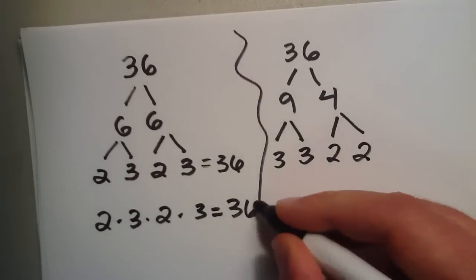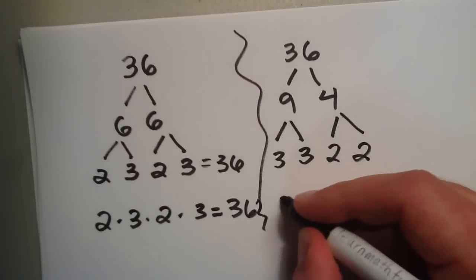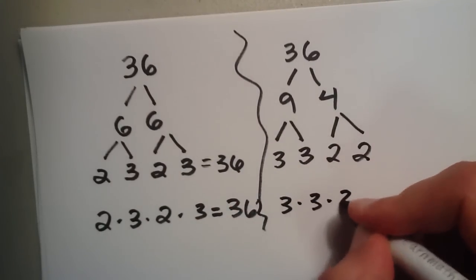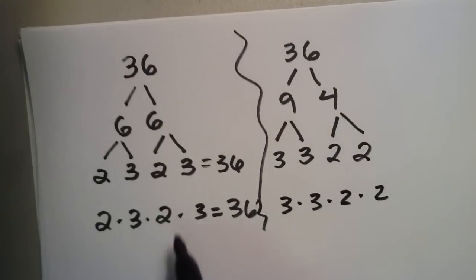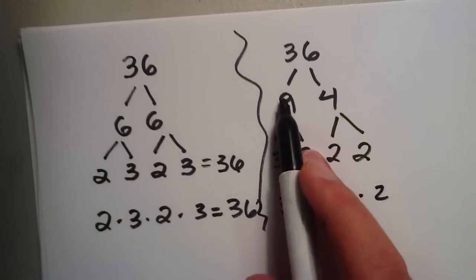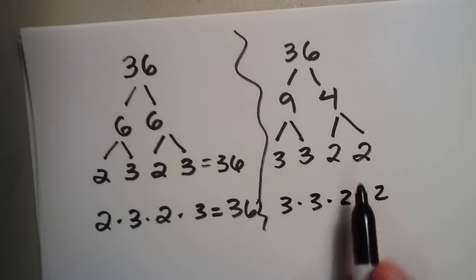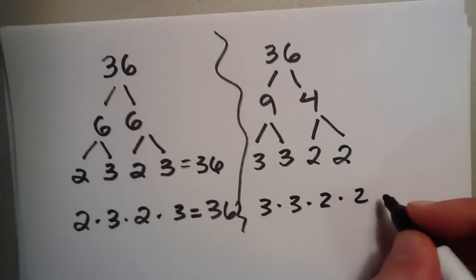Either way, it both equals 36. So it doesn't matter how you factor it. If you factor it into 6's, factor it into 9 and 4 and then reduce down, you're going to end up with the same result.